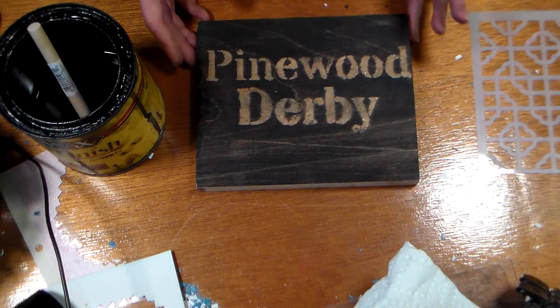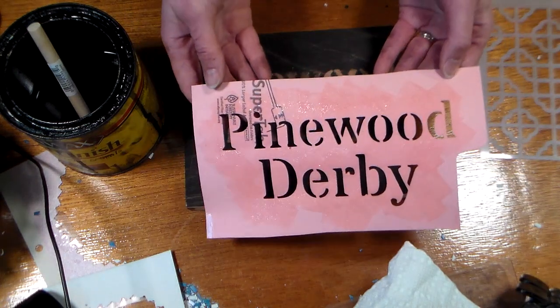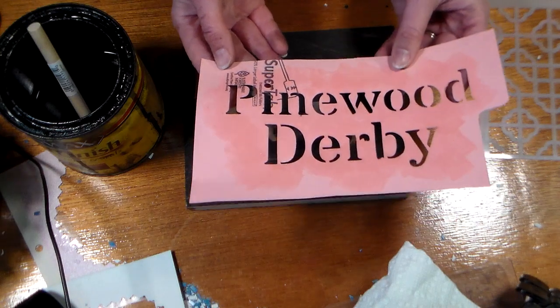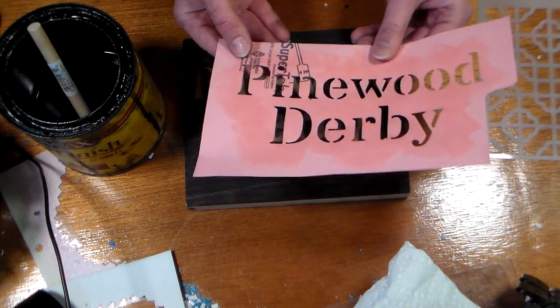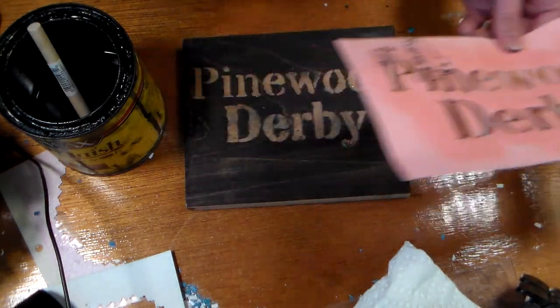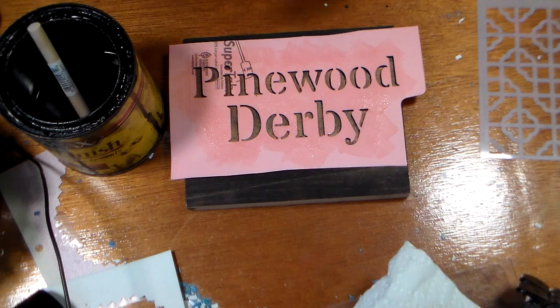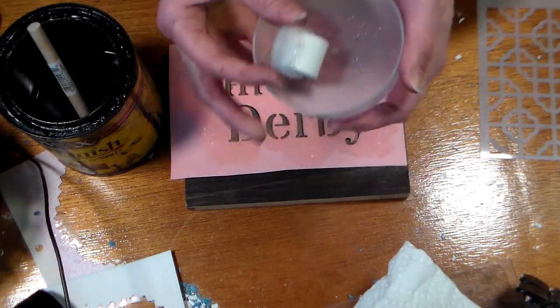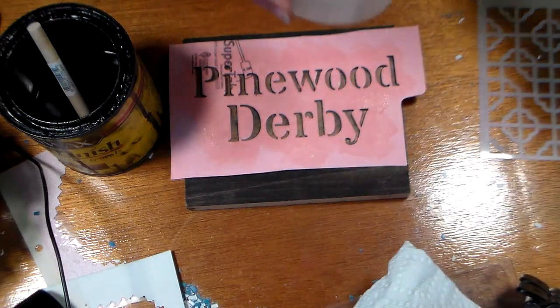But then I thought what if we do like a resist. So here what I did was on my die cutter I made a stencil, here's this Pinewood Derby. I used the font Stardos stencil, which is a free font available online. Just search Stardos stencil. I placed it down here and then I dabbed it with just some vegetable glycerin. You can use clear embossing ink, but I have glycerin so I'm using that.